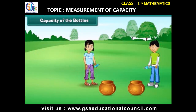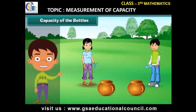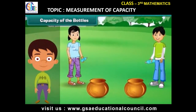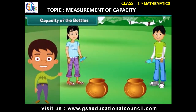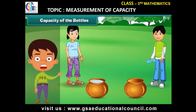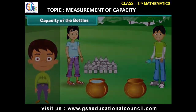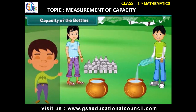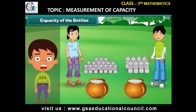Capacity of bottles: There are two pots of the same size. Nima and Naseem have to fill each pot with colored water using their own bottles. Nima's pot gets filled with sixteen bottles of water, while Naseem's pot gets filled with eight bottles of water. We can say that Nima's bottle can hold half as much water as Naseem's bottle.